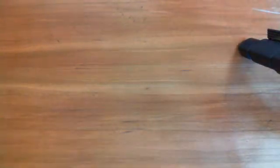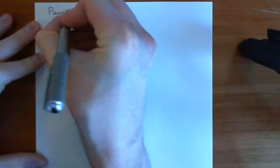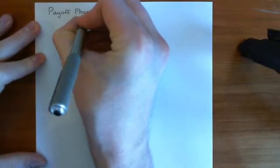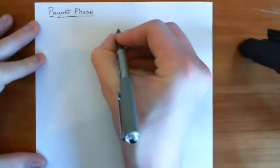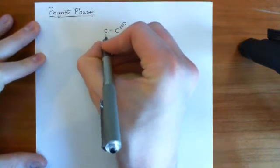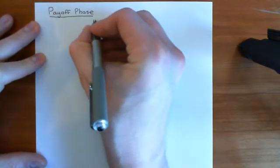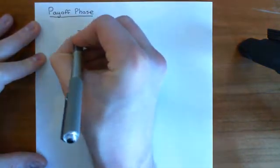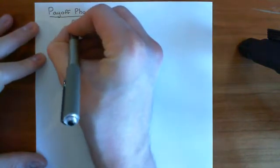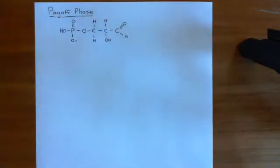We'll now look at what is going to happen to the glyceraldehyde-3-phosphate molecules — this is the payoff phase now. To remind ourselves, we've got our aldehyde group here, then the second carbon which has an alcohol group and a hydrogen coming off it, and then the third carbon which has two hydrogens and an alcohol group which has a phosphate group attached to it. So this is glyceraldehyde-3-phosphate.